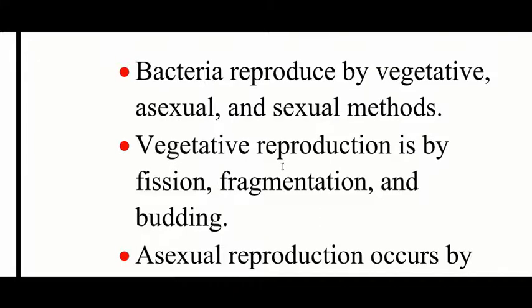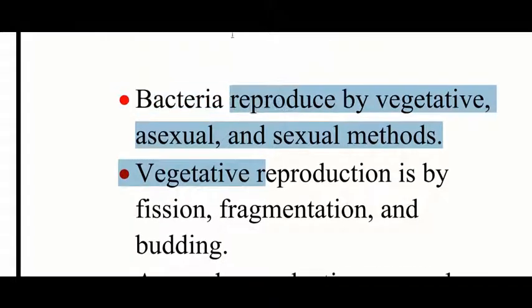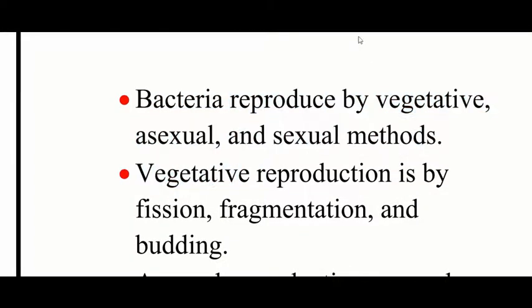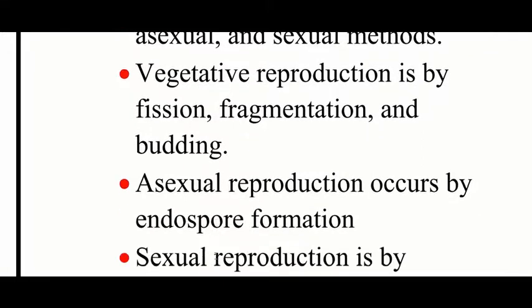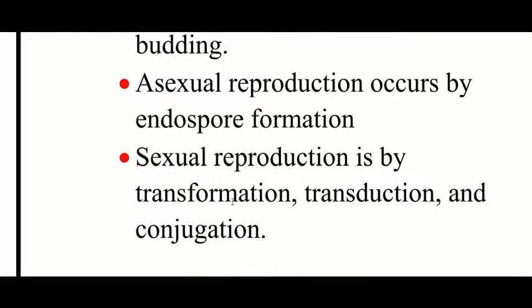Vegetative reproduction is by fission, fragmentation, and budding. Bacterial reproduction is by fission, fragmentation, and budding. Sexual reproduction is by endospore formation, transformation, transduction, and conjugation.